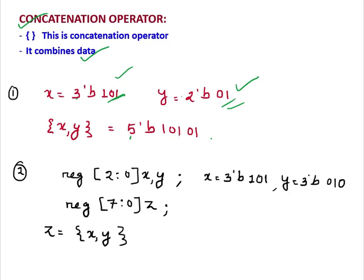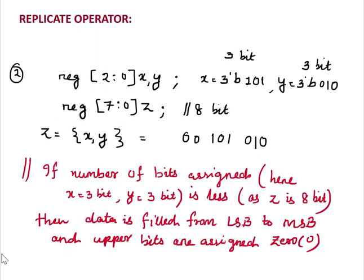The second one is this one: reg [7:0] z, x, y. Here x equal to same 3'b101, y equal to 3'b010, and reg [7:0] z. See here, x is 3 bit, y is also 3 bit, but the output, which is z here, is 8 bits. Then what is the output?